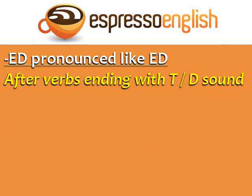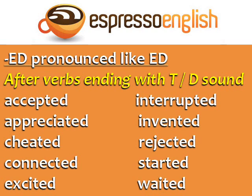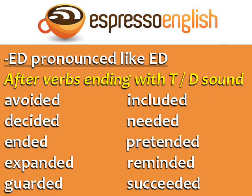The second pronunciation of ED is like ED with an extra syllable, after verbs ending with a T or D sound. Examples include: guarded, included, needed, pretended, reminded, succeeded.